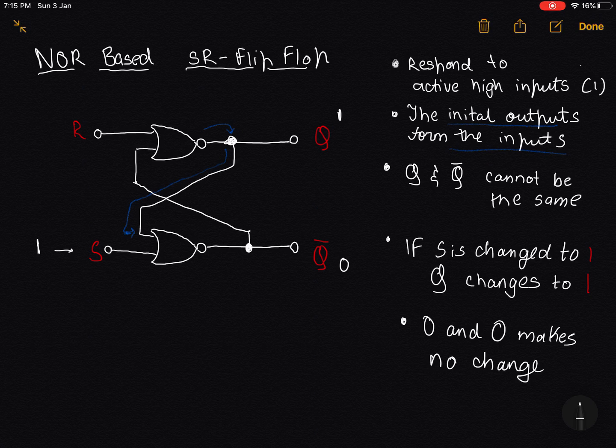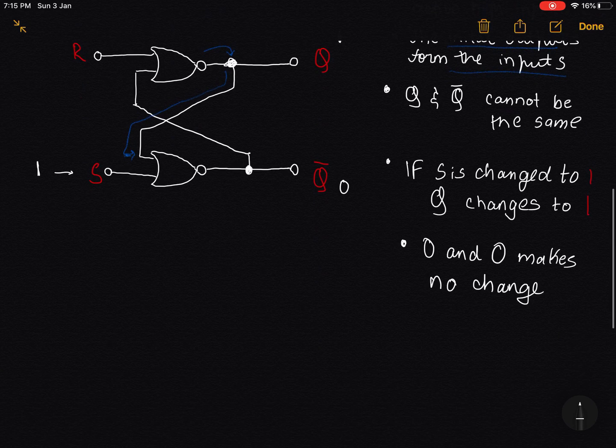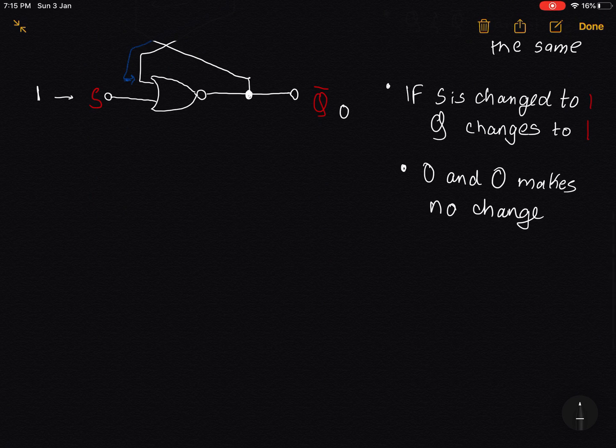And obviously, if Q is 1, Q complement has to be 0. And now 0 and 0 will make no change. So if I already have 1 and 0 over here from the last stage, if my next input is 0 and 0, the Q and Q complement values will not change. So now I'm gonna put up the truth table for this.